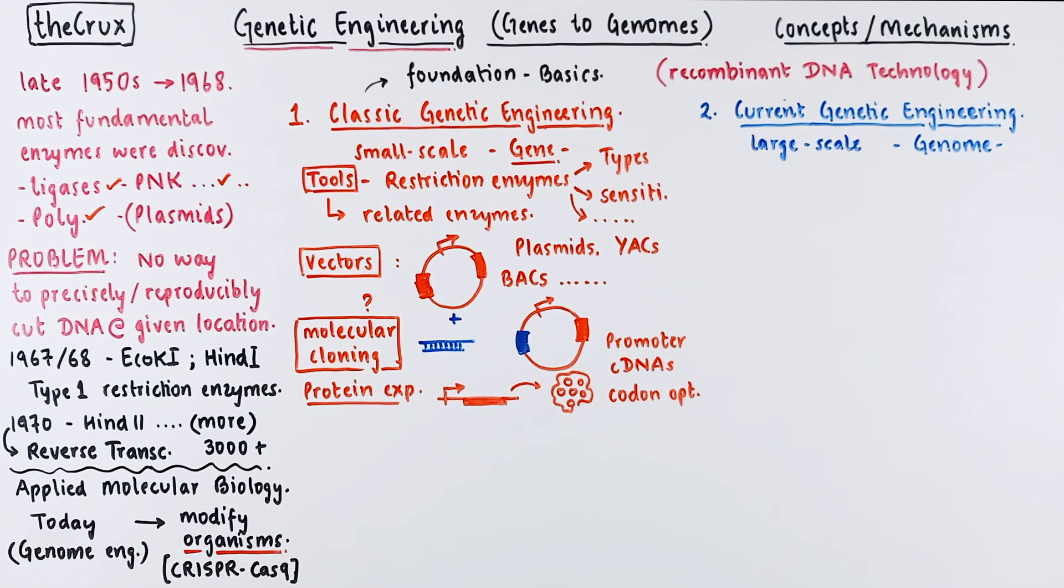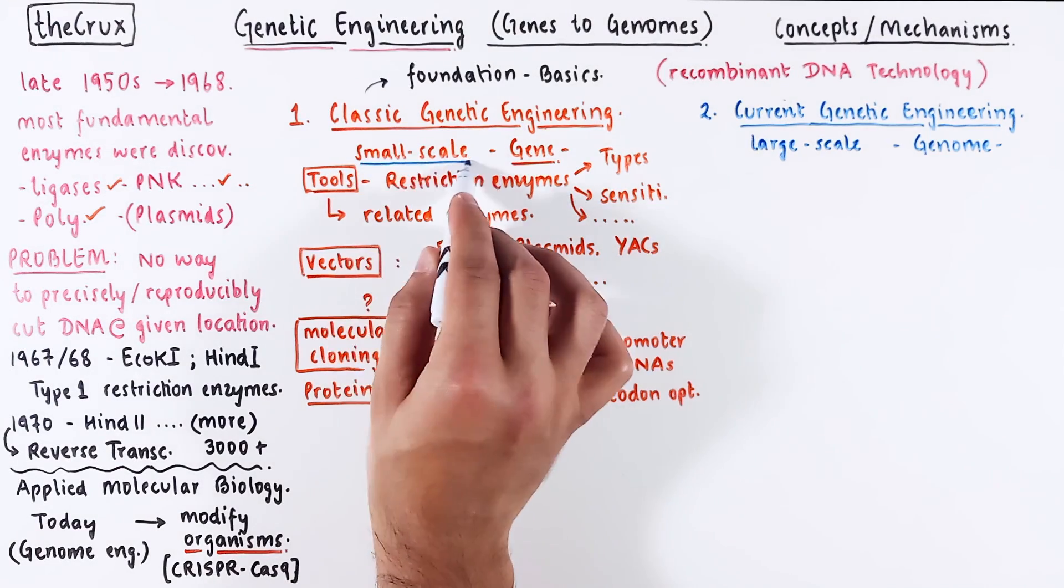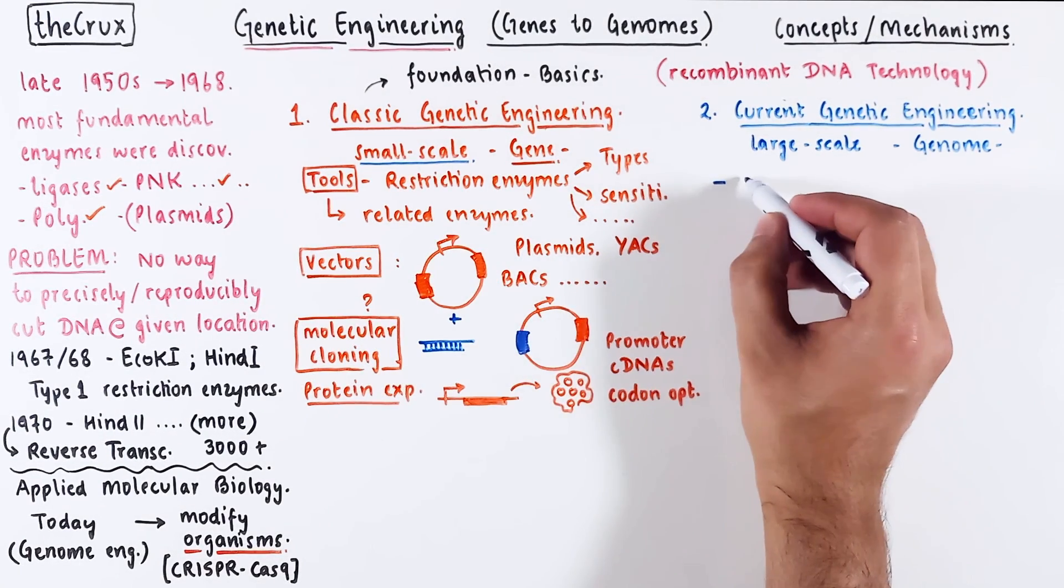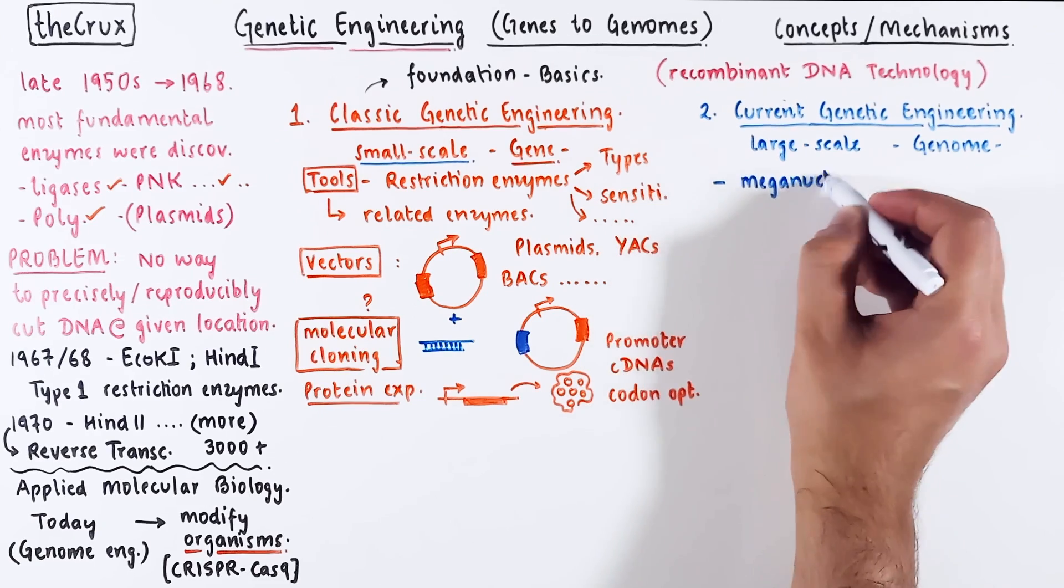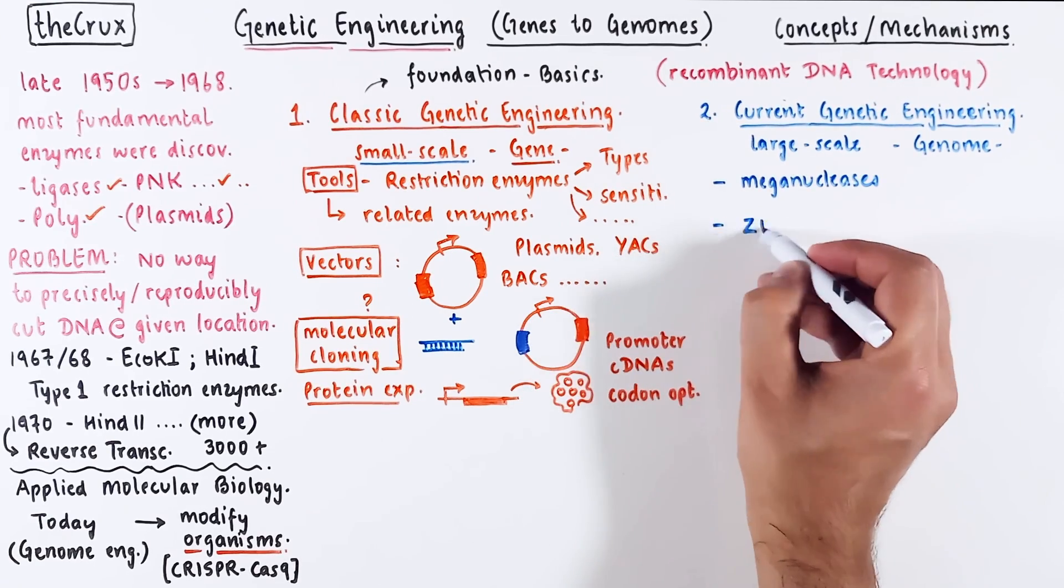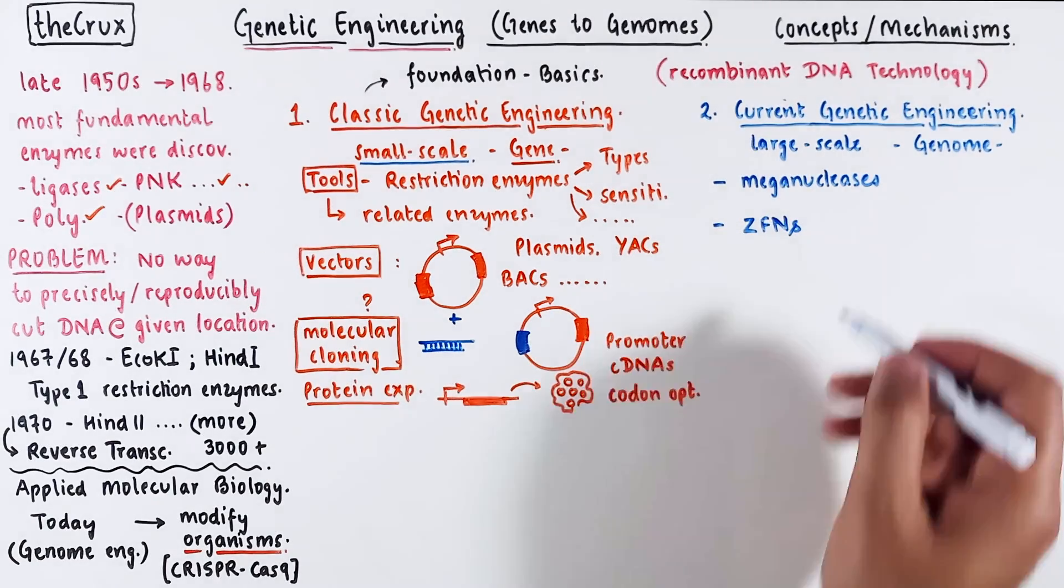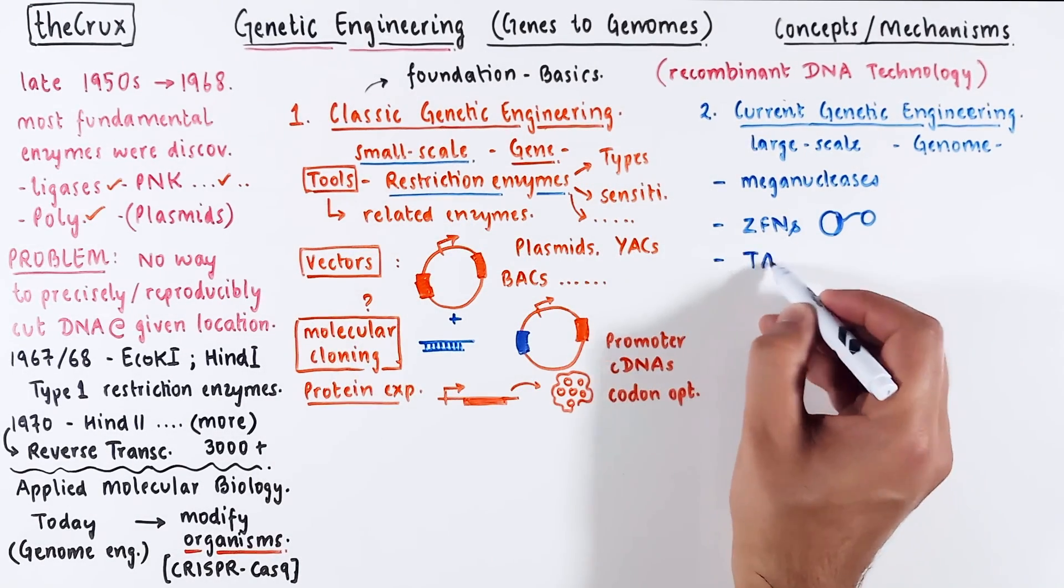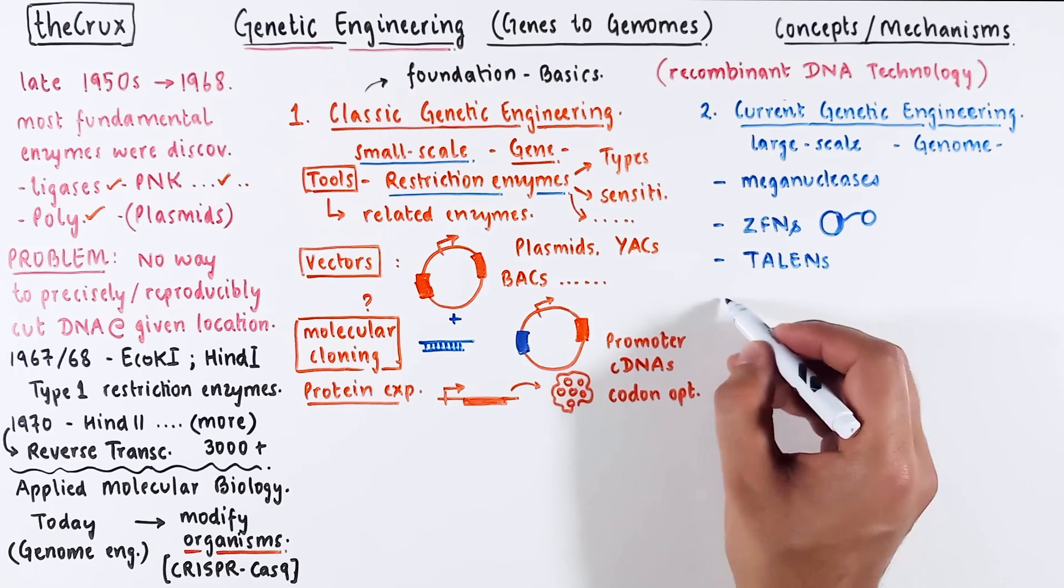After building a solid foundation in gene-level genetic engineering, we will transition into the realm of genome-scale engineering. Here we will touch on meganucleases and zinc finger nucleases, unique enzymes which are derived from specific types of restriction enzymes. We will also explore TALENs, which belong to the similar category of methods.